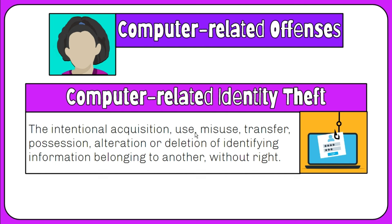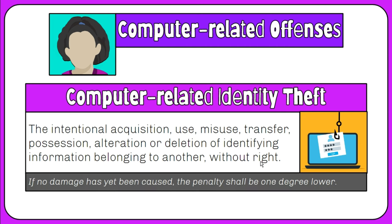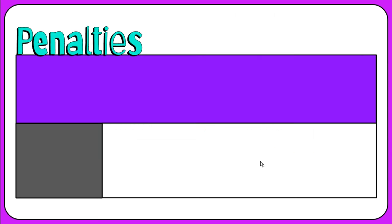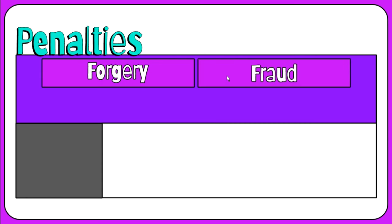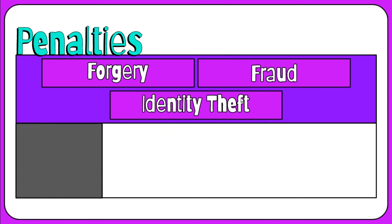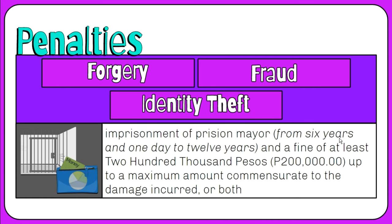Third, computer-related identity theft is the intentional acquisition, use, misuse, transfer, possession, alteration, or deletion of identifying information belonging to another without right. Any person found guilty of computer-related forgery, computer-related fraud, and computer-related identity theft shall be punished with imprisonment from 6 years and 1 day to 12 years, or a fine of at least 200,000 pesos up to a maximum amount commensurate to the damage incurred, or both.